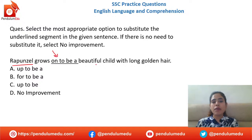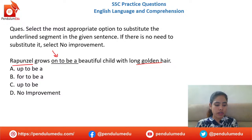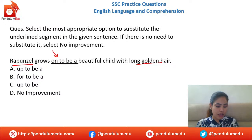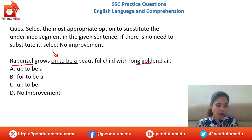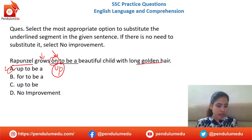Sentence improvement: 'Rapunzel grows on to be a beautiful child with long golden hair.' Options: up to be, a for to be, up to be, no improvement. For 'grow,' we always use the phrasal verb 'grow up' — not 'grow on.' Option A is correct: 'Rapunzel grows up to be a beautiful child.' Option B, 'grow for,' is wrong.